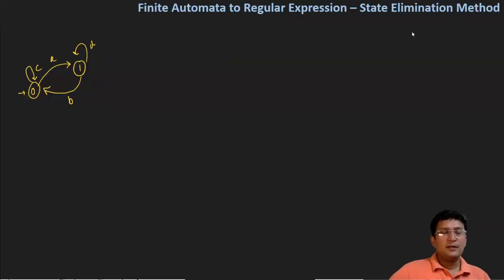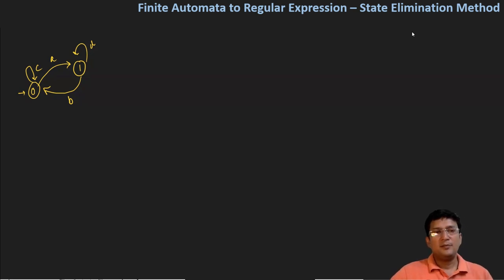Hello everyone. We are now looking at this finite automata and let's try to convert this to the regular expression. You can see that there is an incoming edge at the initial state, so we will resolve the initial state. We will create a new initial state and show the epsilon transition to state number 0.